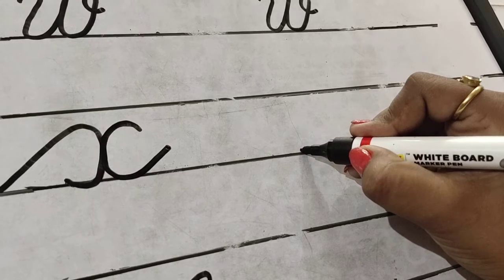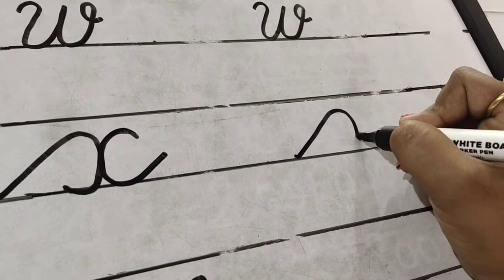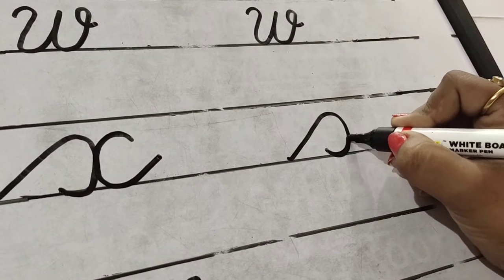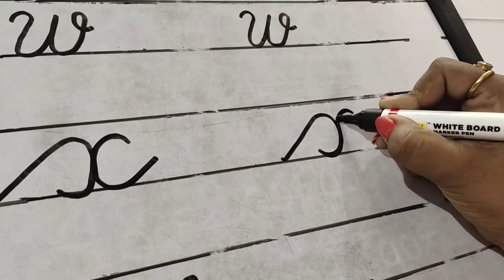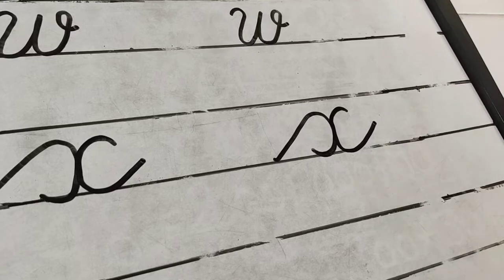Once again, lower line touch, slanting line up, make a reverse C, walk on the body of reverse C, make the direct C, touch the lower line and slightly up. That is X.